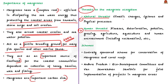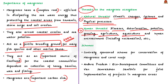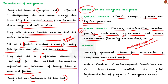Natural threats include climate change, cyclones and physical processes. Anthropogenic threats include diseases, deterioration, pollution, grazing, agriculture, aquaculture and human encroachment. Recognizing these threats, governments have come up with various measures. For example, the central government has launched a centrally sponsored scheme for conservation of mangroves and coral reefs. Also, the Andhra Pradesh forest department has formed eco-development committees and Van Samrakshan Samities for joint implementation of projects in mangrove areas.